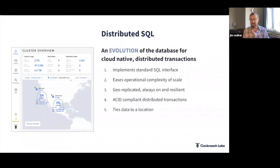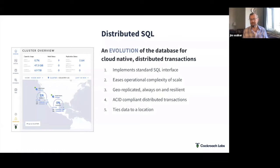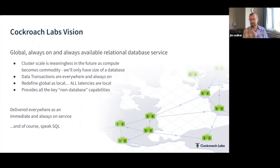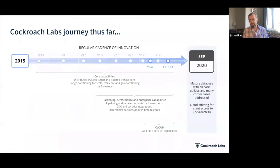We implemented a feature called geo-partitioning so we can tie data to location, optimizing at the table level how quickly you can access data and how you configure your survival mechanism. These are the five requirements for something to be truly distributed SQL — a lot of this is distributed systems fundamentals: atomic unit design, scalability, disposability, and resilience. Our vision is to be a global database — a relational database always available to everybody. We've been building for about five and a half years.